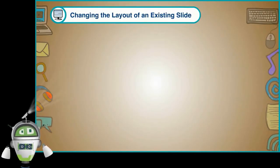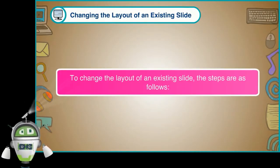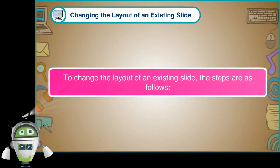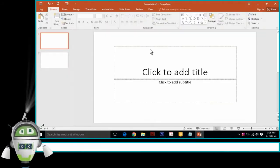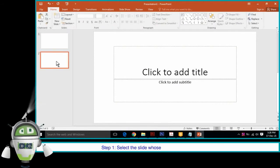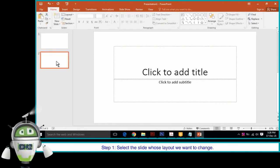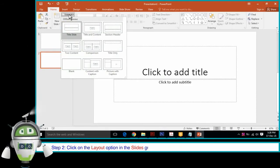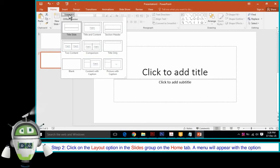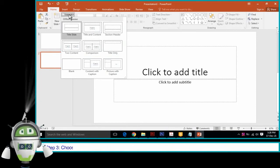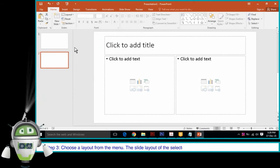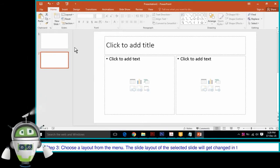Changing the layout of an existing slide: Step 1 — Select the slide whose layout we want to change. Step 2 — Click on the Layout option in the Slides group on the Home tab. A menu will appear with the options. Step 3 — Choose a layout from the menu. The slide layout of the selected slide will get changed in the presentation.